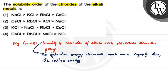So if we look at this concept, we have Sodium, Potassium, Rubidium, and Cesium. So clearly, as we go down the group: NaCl, then KCl, then RbCl, and then CsCl. So this is going to be the final order. Option one will be the correct option. I hope you have all the answers. Thank you very much. All the best.